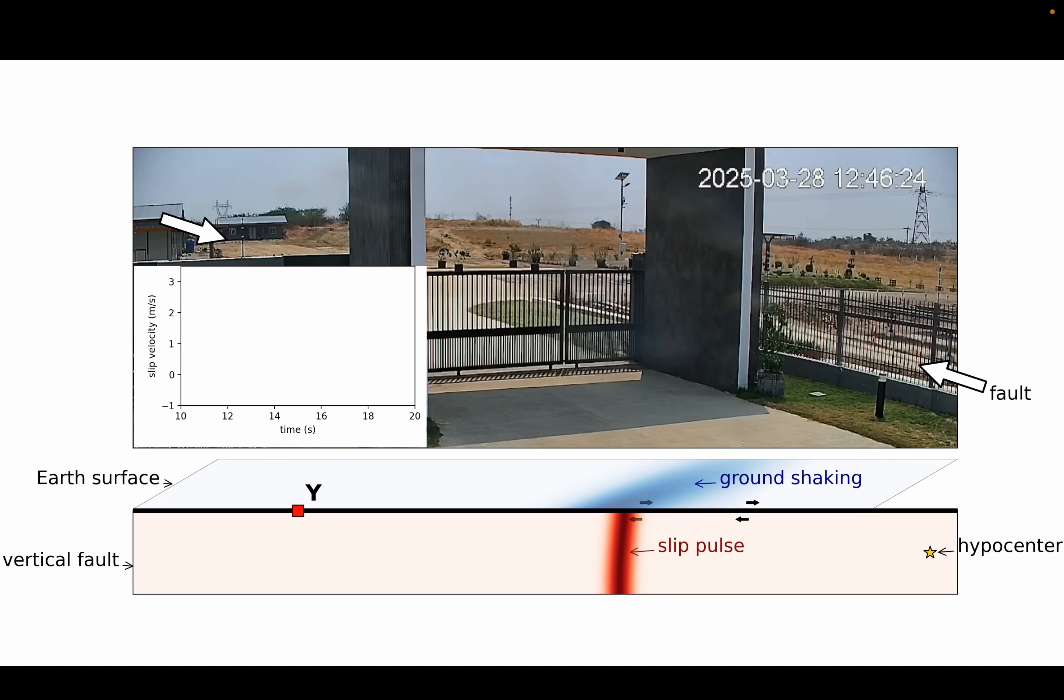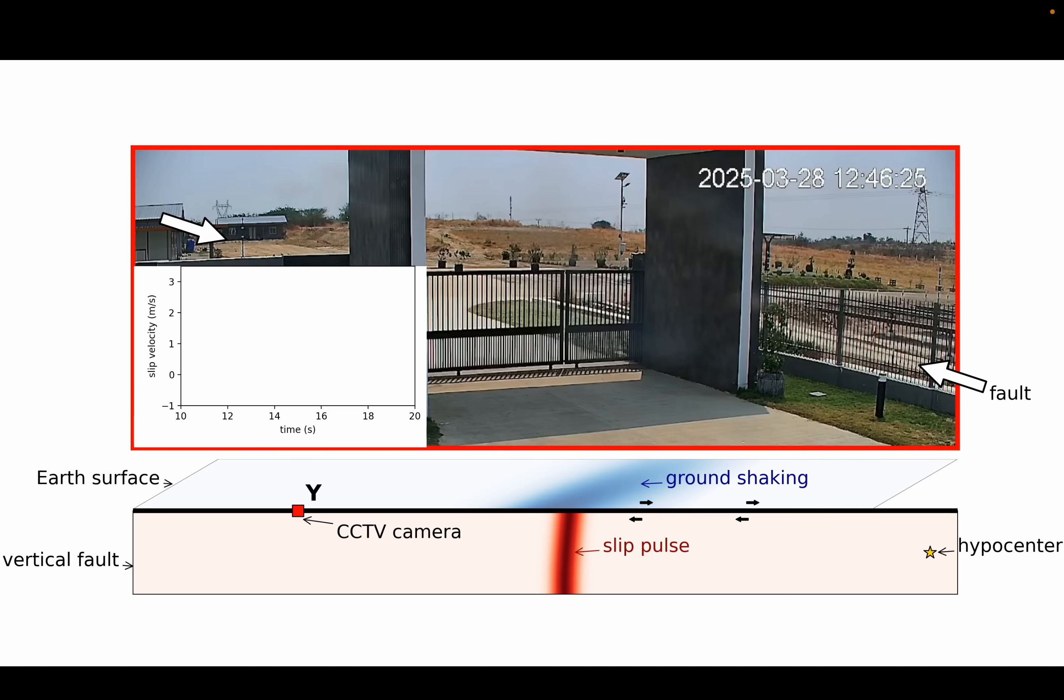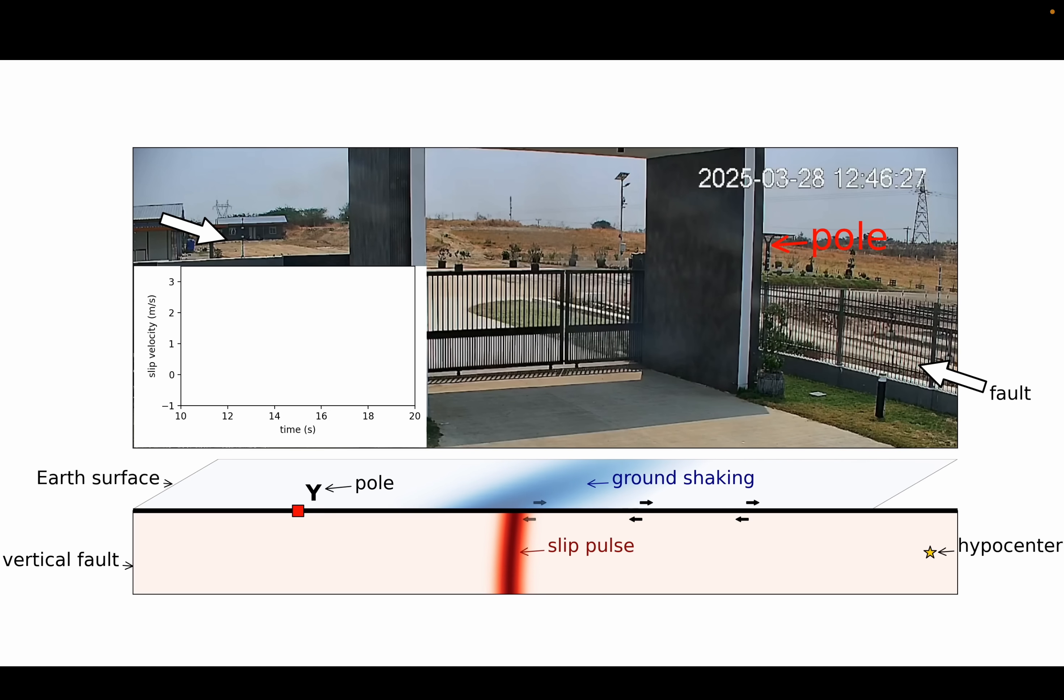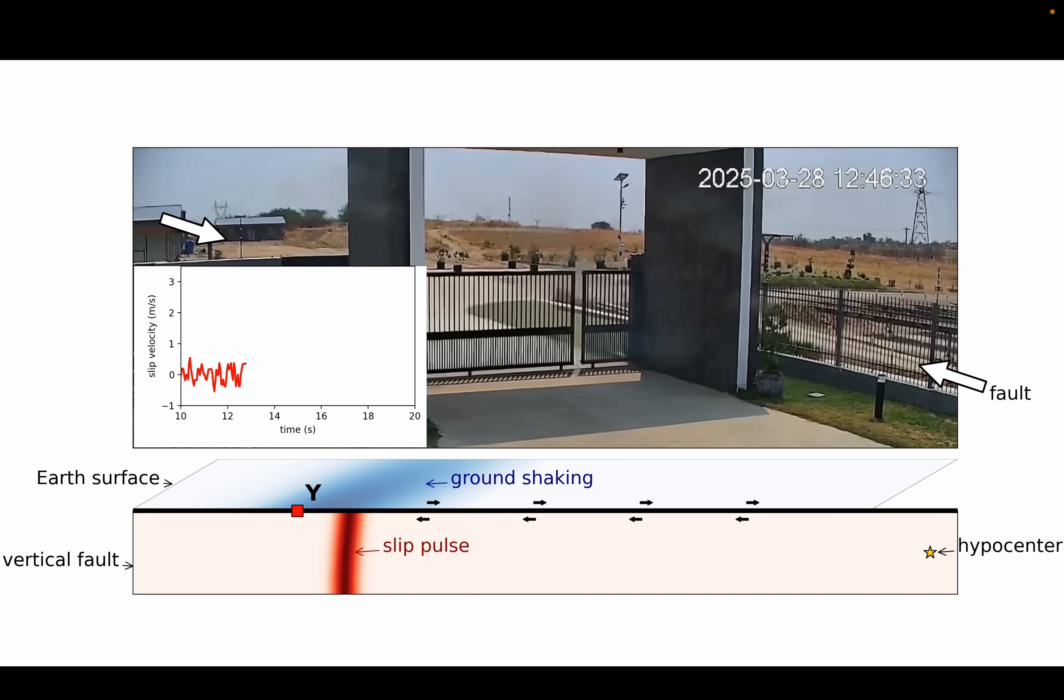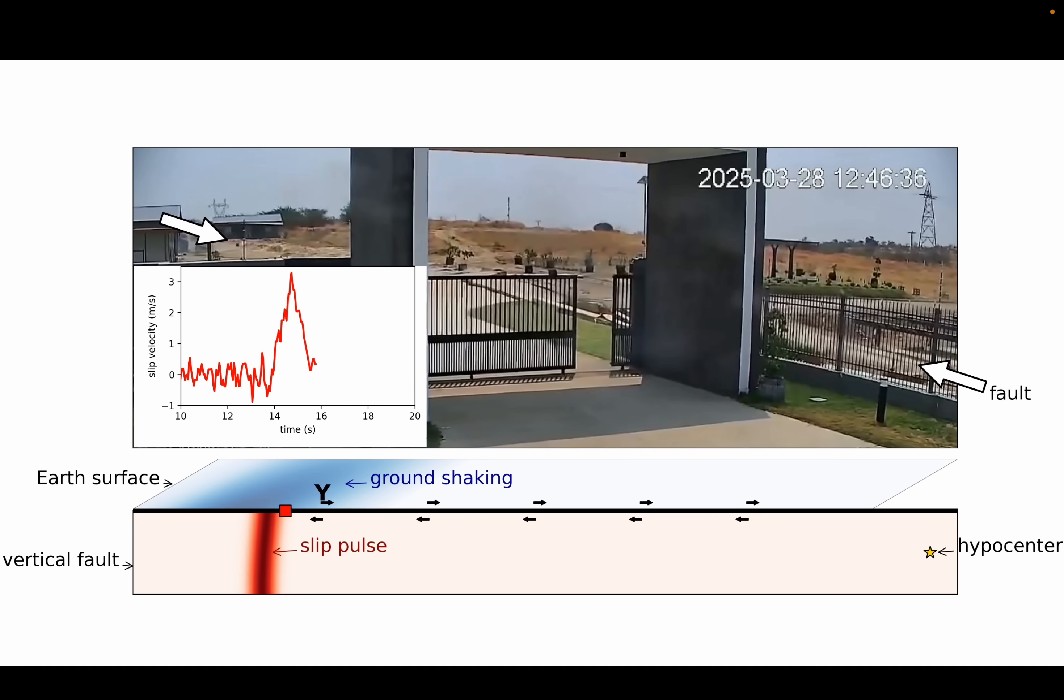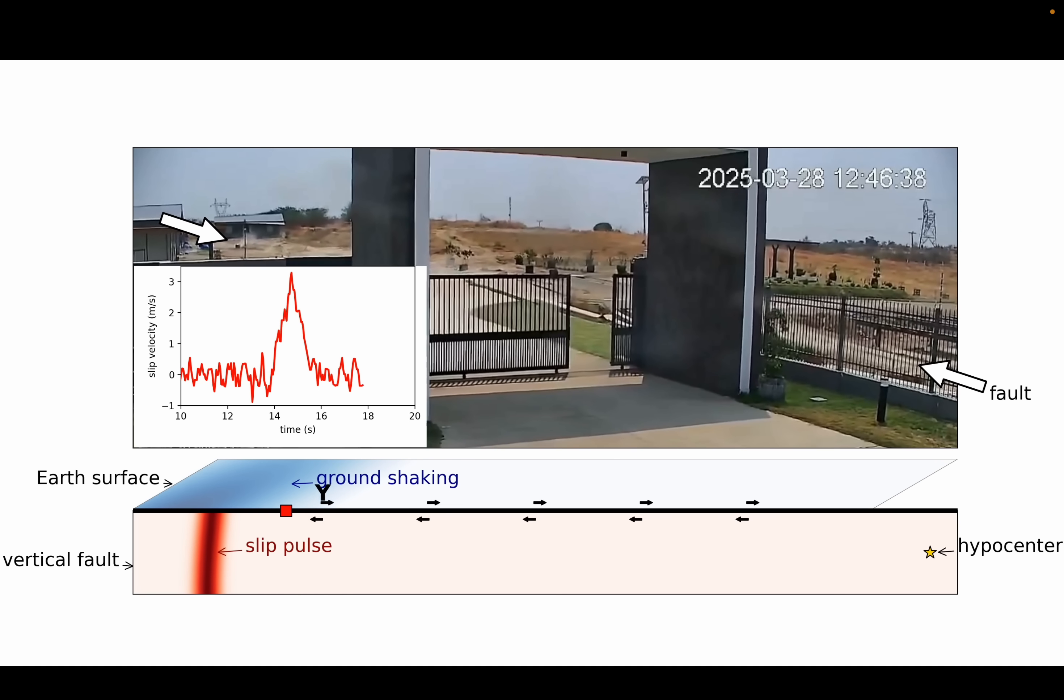The video starts after the earthquake has already begun and the rupture right now is traveling towards the camera as a pulse of slip on the fault. The first thing you notice is the ground begins to shake and then the rupture arrives and the ground moves as the fault slips.